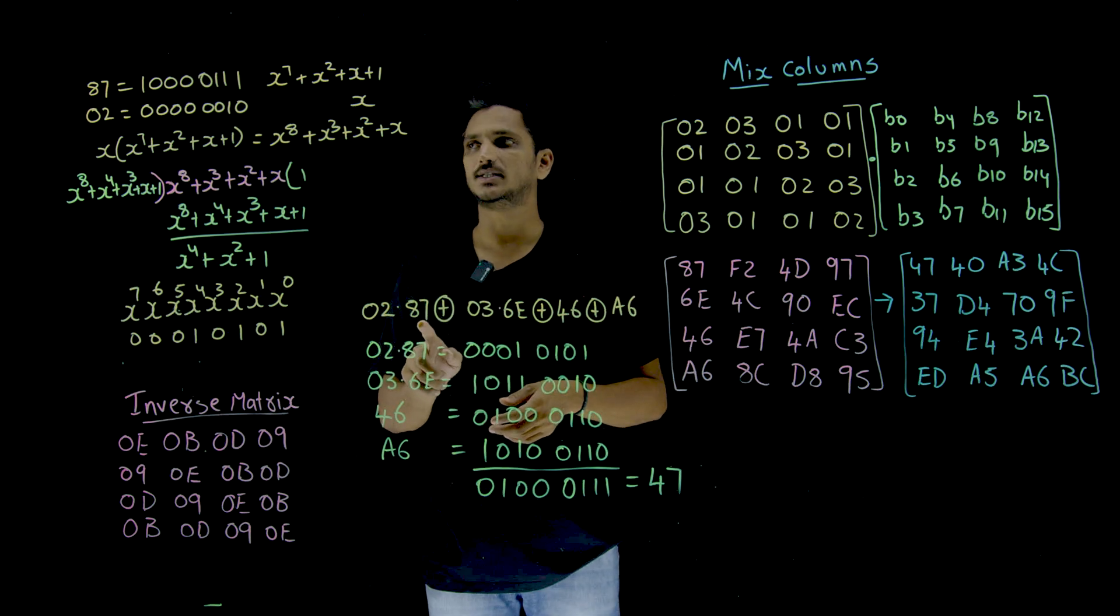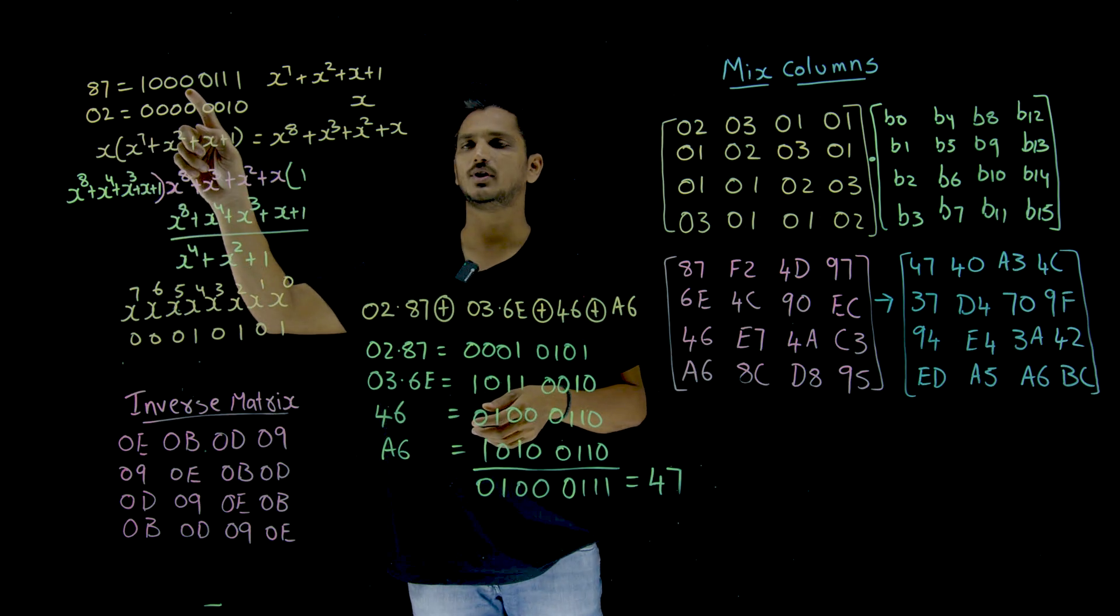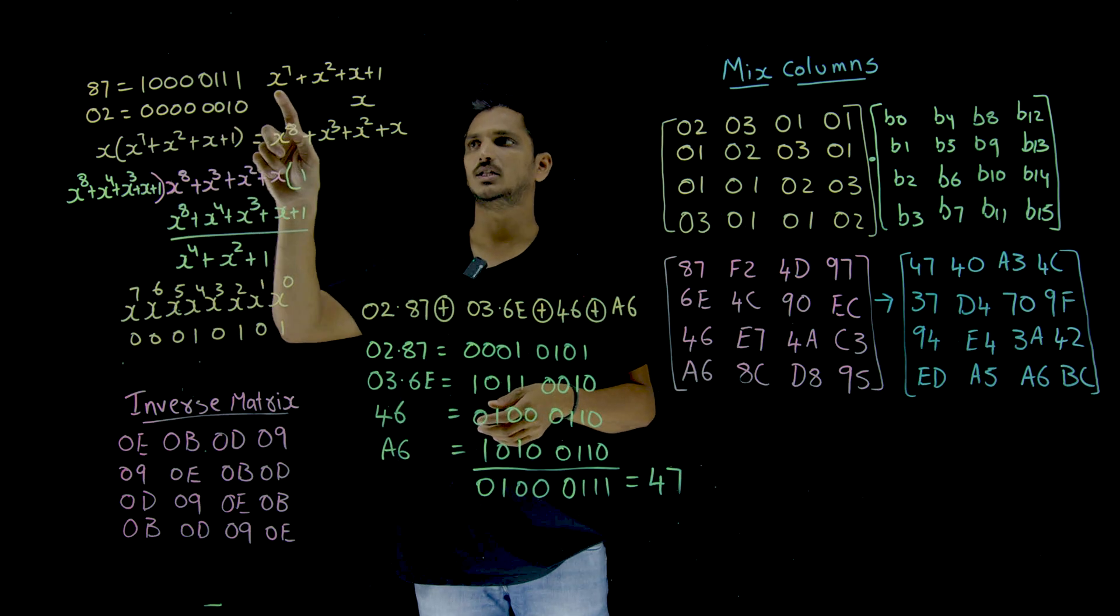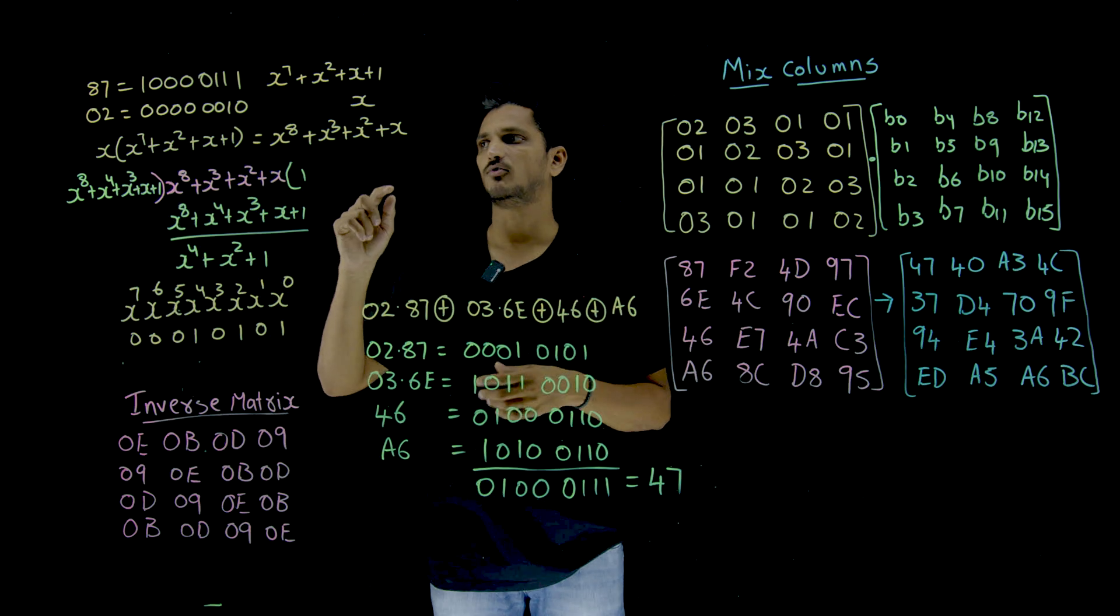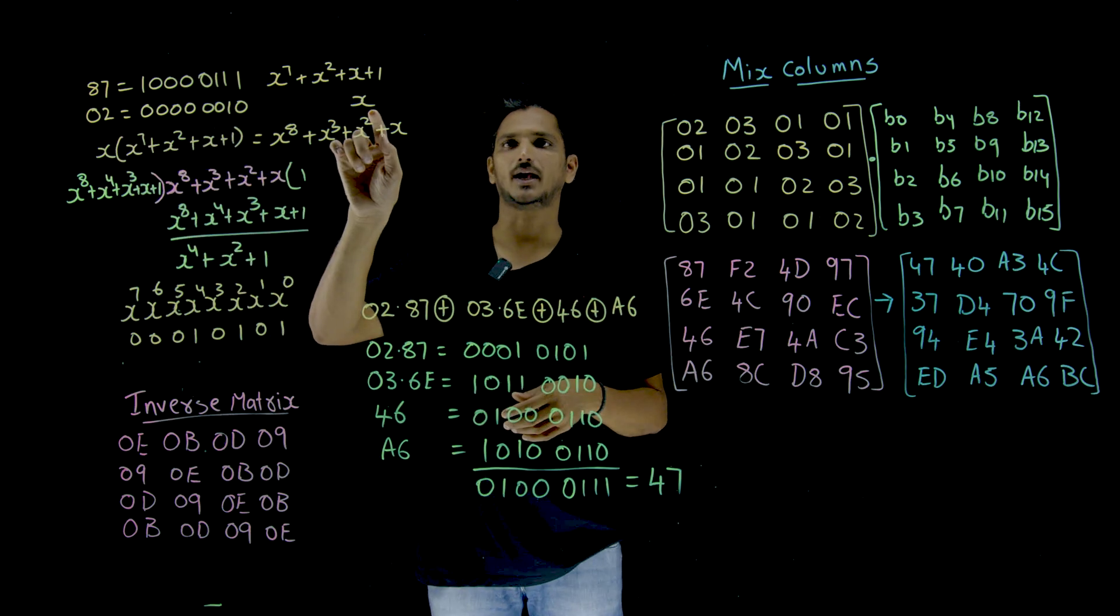02 multiplied by 87. 87 means if you write it in 8, 1 double 0, 1 triple 0 is 8. 7 means 0 triple 1. This means X power 7 plus X square plus X plus 1 in the polynomial form. Similarly, 02 means all 0s. Next one is 0010, means X.